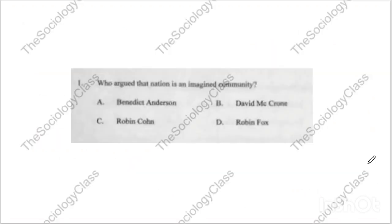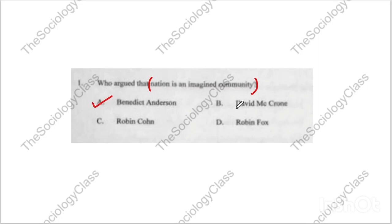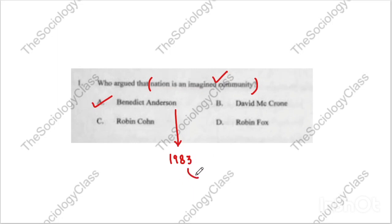Question number one: Who argued that nation is an 'imagined community'? The options are Benedict Anderson, Davis Crone, Robin Kone, or Robin Fox. The correct answer is A — Benedict Anderson. In previous papers I have explained imagined community in detail. Remember, Benedict Anderson's book is itself called 'Imagined Communities,' published in 1983.